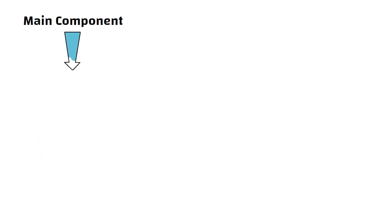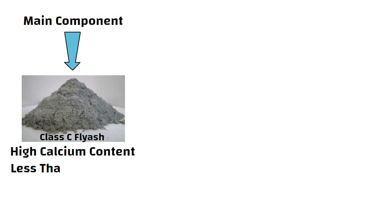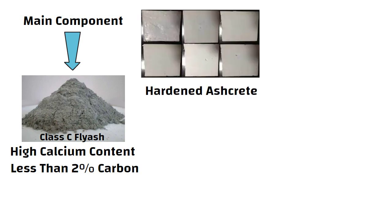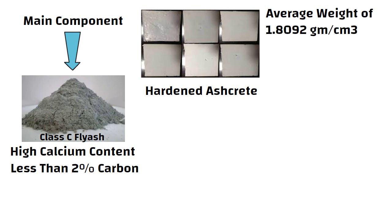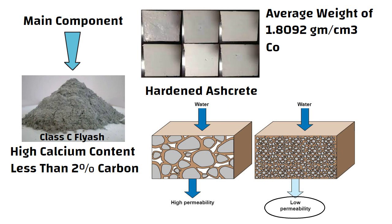The main component of ashcrete is class C fly ash, which has a high calcium content and less than 2% carbon. The hardened ashcrete is dense with an average weight of 1.8092 g per cm³, and it has a low permeability with compressive strength of greater than 21 MPa.